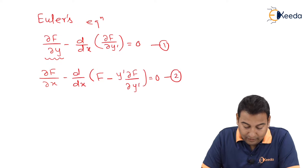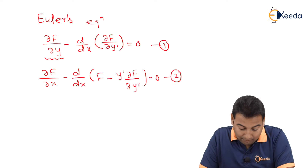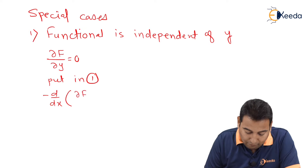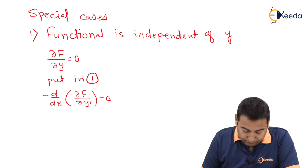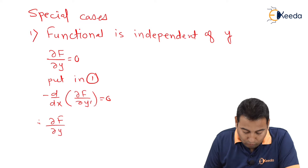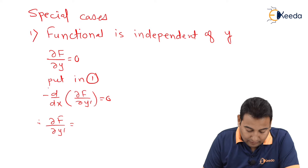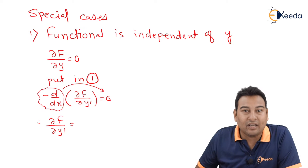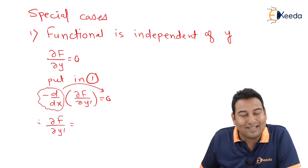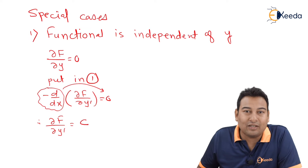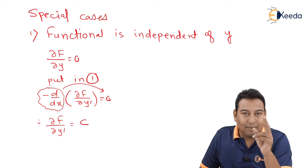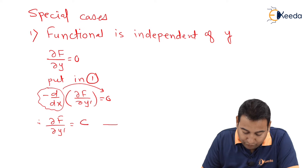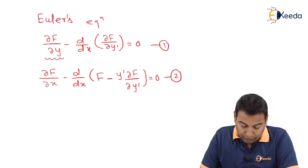Substituting ∂F/∂y = 0 into equation number one, the first term becomes zero and we are left with: −d/dx(∂F/∂y') = 0. Moving the −d/dx to the other side gives integration, and integration of zero gives a constant c. Therefore, ∂F/∂y' = c. This is equation number three.